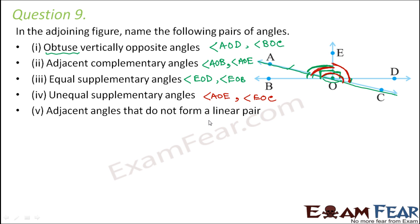Adjacent angles that do not form a linear pair means two adjacent angles whose sum is not equal to 180 degrees. Two such angles could be this angle and this angle — their sum is neither 90 nor 180 degrees, but they are located one after another with a common vertex, a common arm, and no common interior point. Therefore angle COD and angle DOE are adjacent angles that do not form a linear pair.